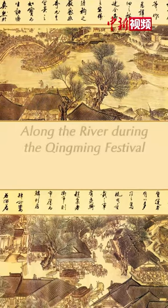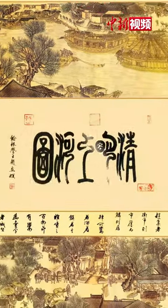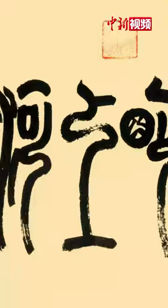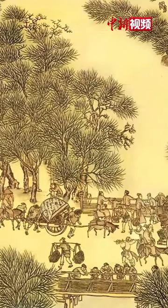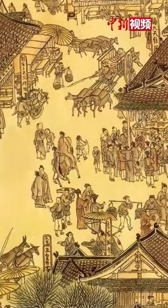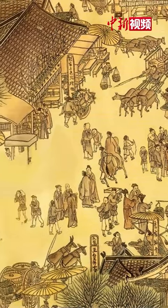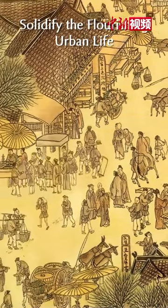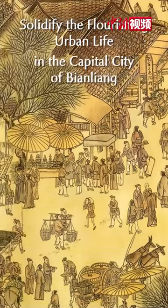In Along the River During the Qingming Festival by Zhang Zeduan, more than 800 figures are depicted. The running Bianhe River provides a picturesque background for the pedestrians who, with different expressions and postures, solidify the flourishing urban life in the capital city of Bianjing.